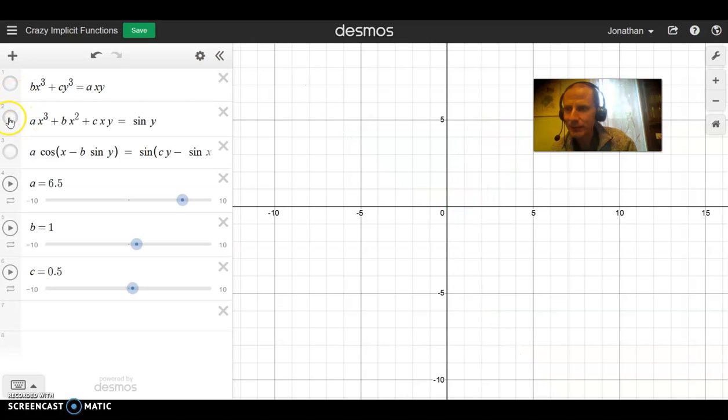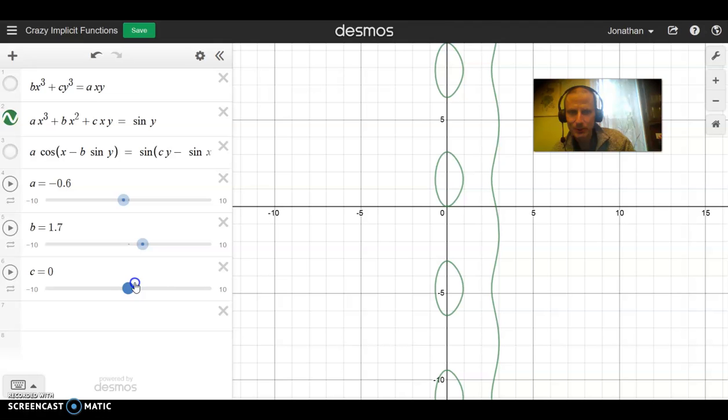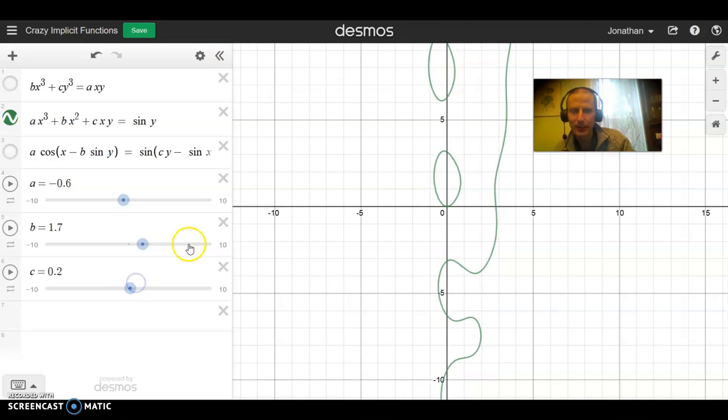So you can get so many cooler graphs. So I'll hide that one and we'll show this one. So this is the function ax cubed plus bx squared plus cxy equals sine y for various values of a, b, and c. And we can move these sliders around and look at what interesting things you get. I don't know. It's just kind of crazy. We get those different loops. So which one do we like the best? I don't know. How about that one?